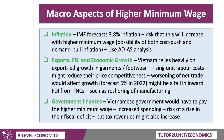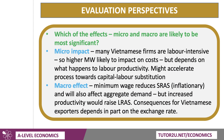In a 25-marker, choose one key analysis point, analyze and evaluate it with a diagram. Choose one macro aspect, analyze and evaluate it. Don't try to spread the jam too thinly — focus on micro supported by micro evaluation, macro supported by macro evaluation, and then a final reasoned judgment on which of the effects might be most significant and why.